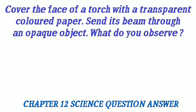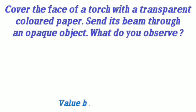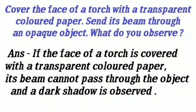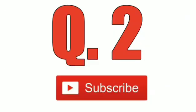Question 1: Cover the face of a torch with a transparent colored paper. Send its beam through an opaque object. What would you observe? Answer: If the face of a torch is covered with a transparent colored paper, its beam cannot pass through the object and a dark shadow is observed.